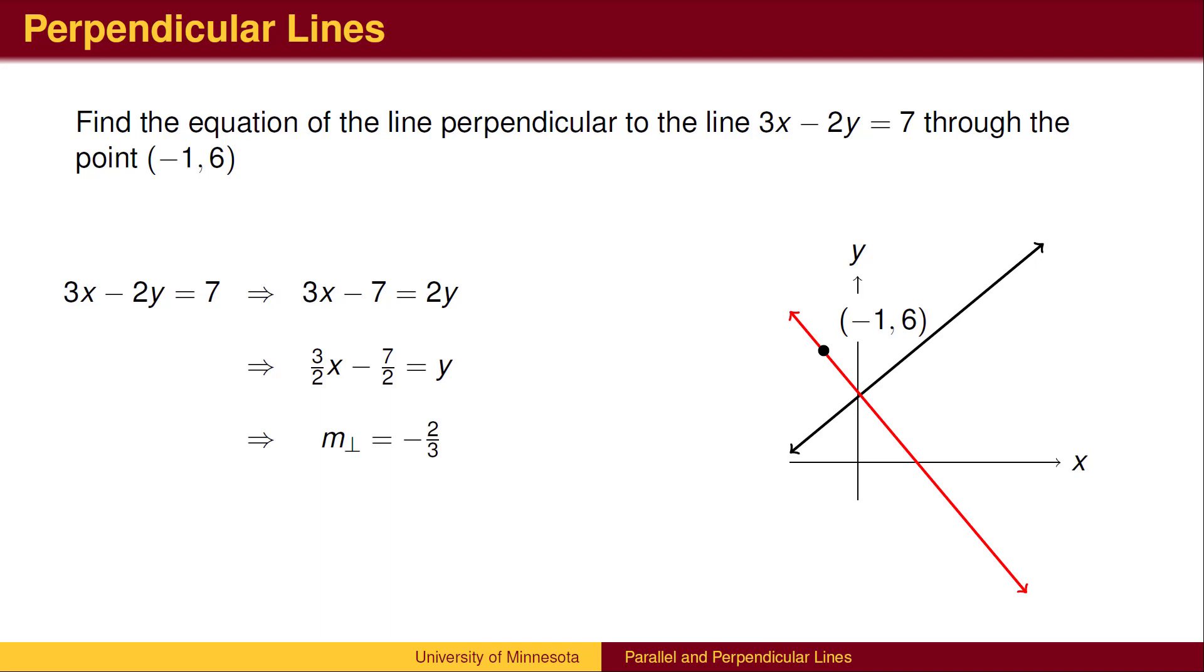So, to get the slope of the perpendicular line, we change the sign to negative, then take the reciprocal. Using the slope negative 2 thirds and the given point, we can then use the point-slope form of a line to find the answer.